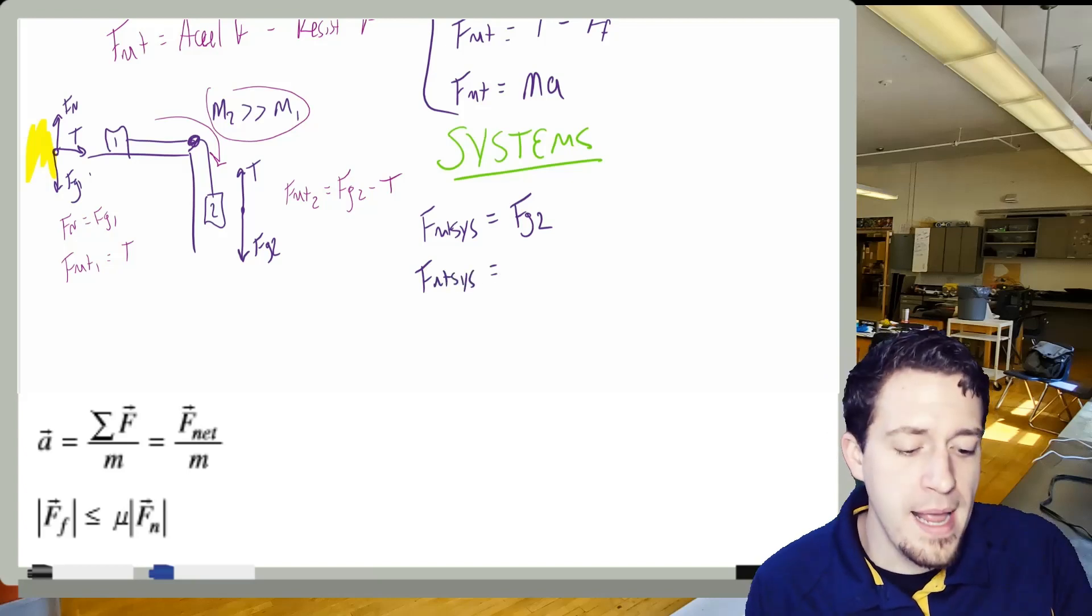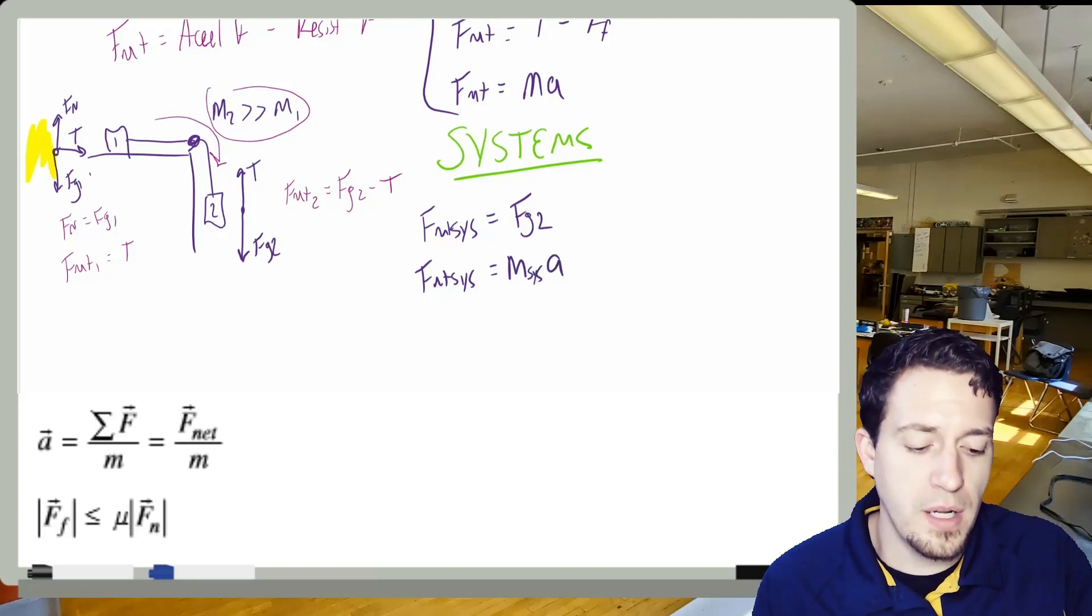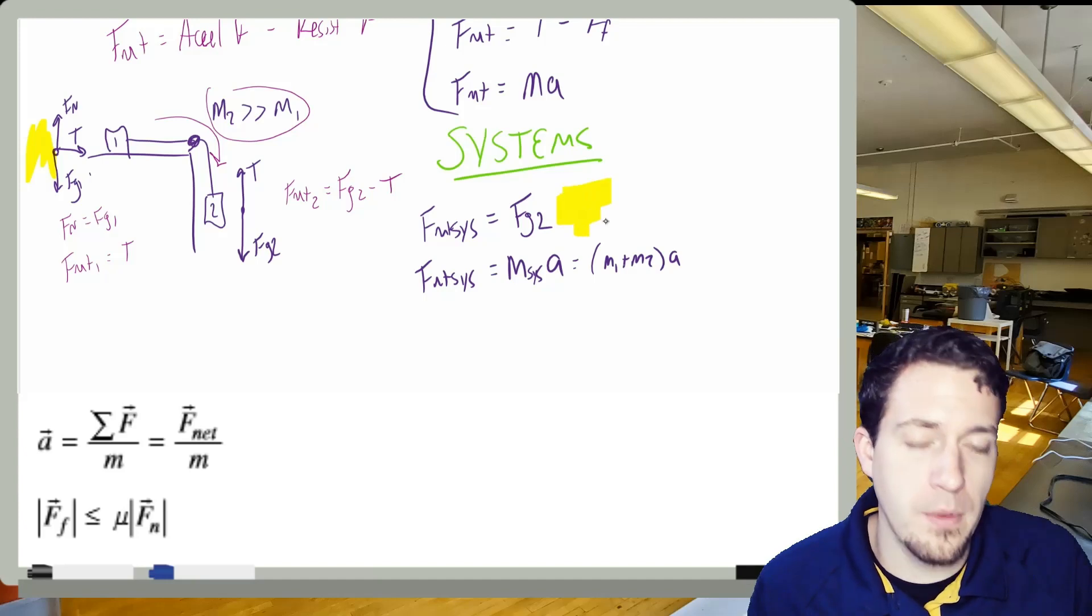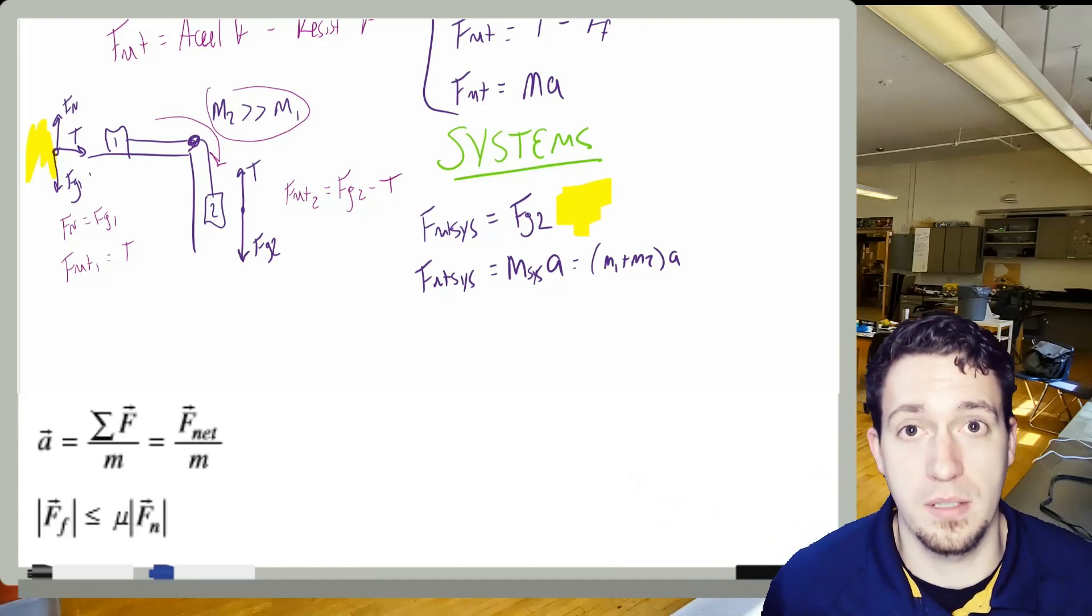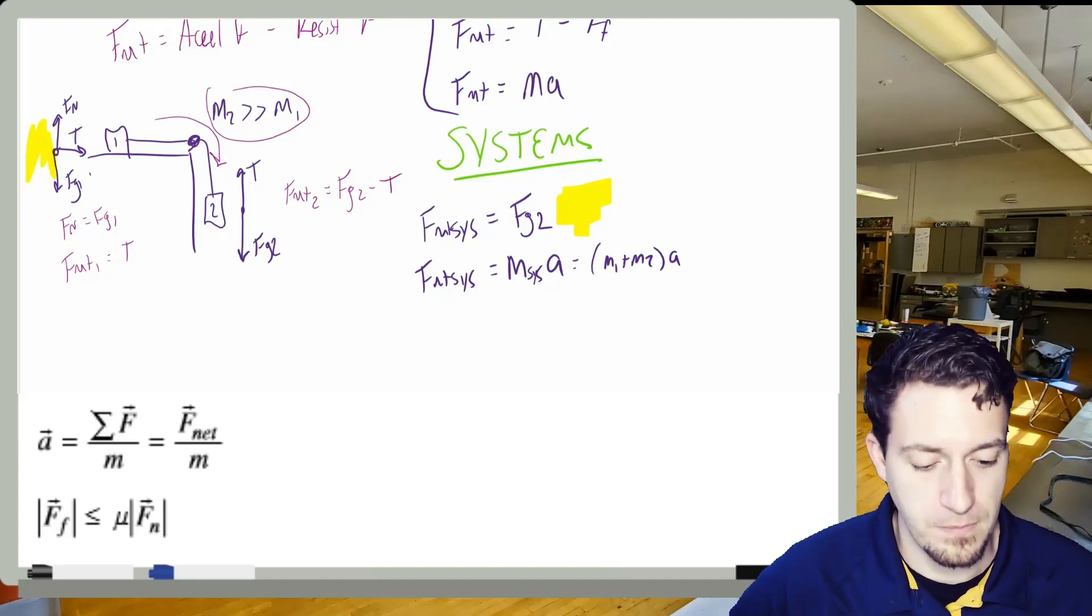and then it'd be F_net sys, and my meatloaf! But now, it's m_sys. So when I do this, this is actually going to be m1 plus m2 times a. Now, obviously, if you had something like friction, that would go there, right? Or if you had another rope, like in problems like the trifecta, right? We would tack that on there.